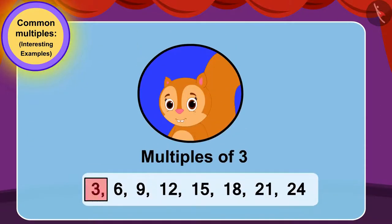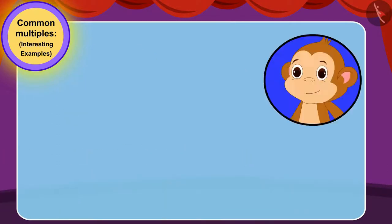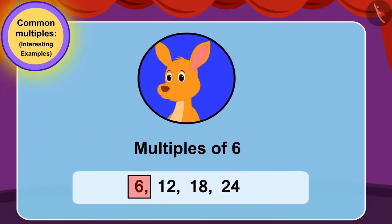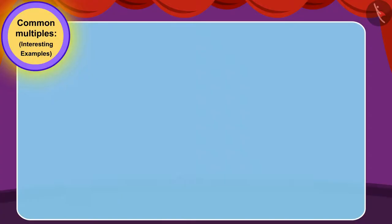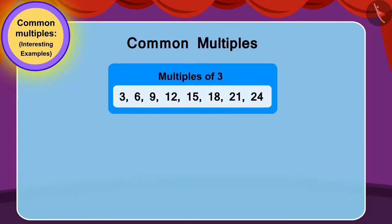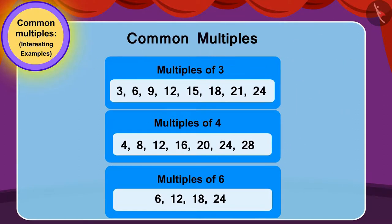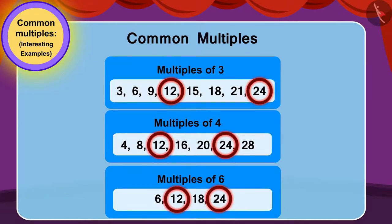Chanda will jump on stones three, six, nine, twelve, fifteen, eighteen, twenty-one, and twenty-four. Babban will jump on stones four, eight, twelve, sixteen, twenty, and twenty-four. Now, can you find the common multiples of these three numbers and find out if there are more than two stones on which all three friends jump? You can find the answer by pausing the video. Yes! Twelve and twenty-four — three, four, and six have these common multiples.